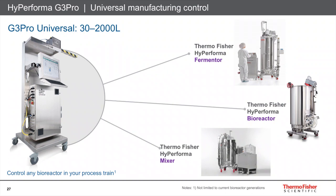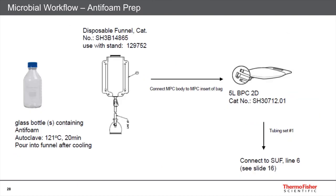What I want to talk about next is the materials required for the workflow around microbial fermentation. You need media, peptones, and additives that need to go into the fermenter. We've developed a range of support materials to transition production of materials like anti-foam into methods for adding them to a single-use fermenter — for example, using autoclave bottles, then through a disposable funnel into a single-use bag that can be connected directly onto your fermenter bag.